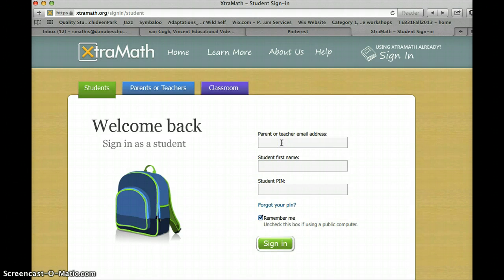Here you need to type my email address, which is smathis at danubeschool.com. You need to use my email address because I registered our class, and this will make sure that the data for your student is sent to me so that I can use it to inform my instruction.